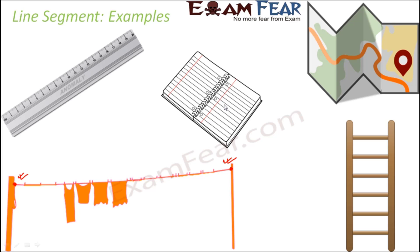Your textbook or notebook lines also have endpoints, so those are line segments. One simple exercise: take a sheet of paper, fold it, then straighten it again — you see a line formed along the fold, and that's also a line segment because it has fixed endpoints. The ladder you see on the screen — each segment is a line segment because they have their fixed endpoints. These are all examples of line segments from our day-to-day life. I guess now when you look at things around you, you'll be able to find out where you see line segments.